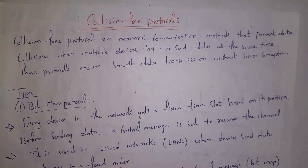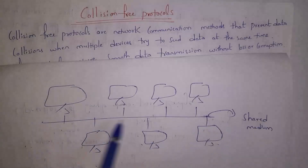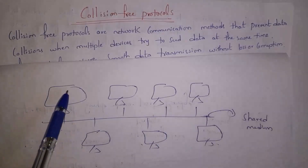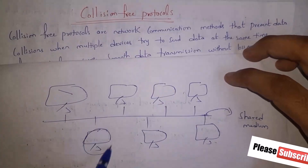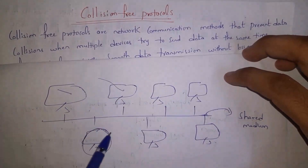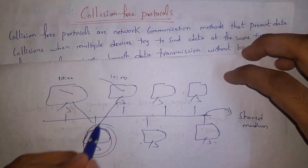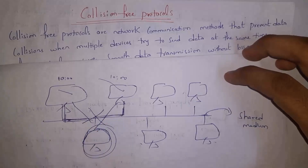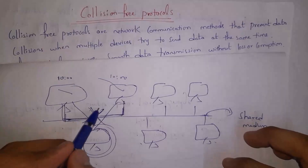Let's get started. First I will explain what are collision free protocols. For example, there are multiple computers connected to a single cable — we call the single cable a shared medium. In a shared medium, whenever multiple computers send data at the same time, collision will occur. For example, if two computers both send data at exactly 10 o'clock, their data will interfere with each other — that interference is called a collision — and the data will be lost.